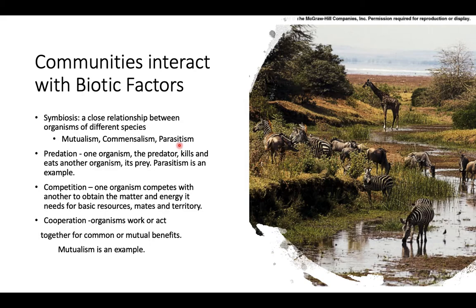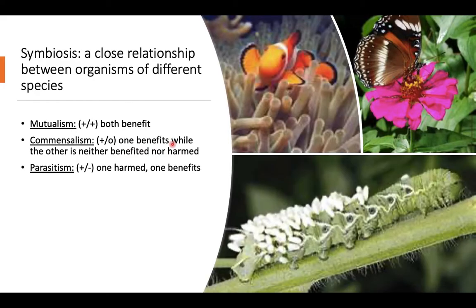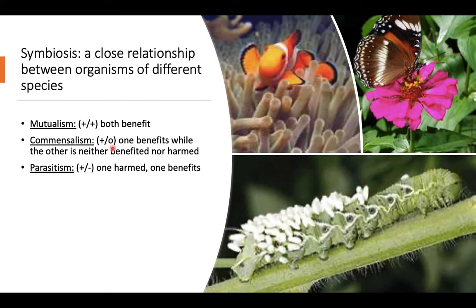You have three examples of symbiotic relationships: mutualism, commensalism, and parasitism. A mutualistic relationship is where both organisms benefit — think of it as plus/plus. In this picture, the butterfly and the flower have a mutualistic relationship: the butterfly gets the nectar it needs from the flower, and the flower gets pollinated by the butterfly. Both benefit.